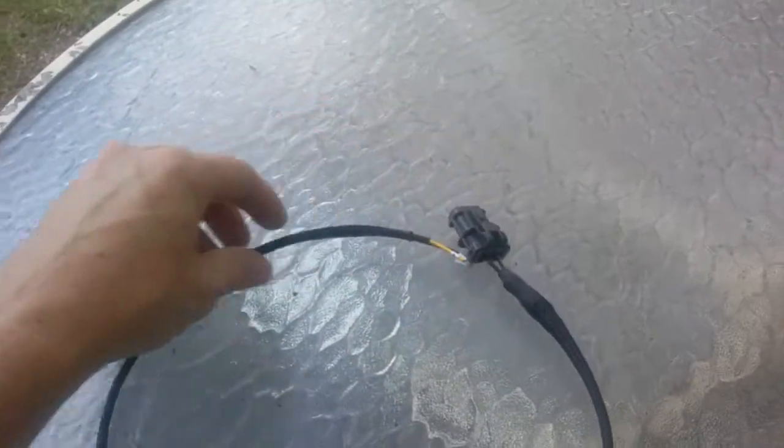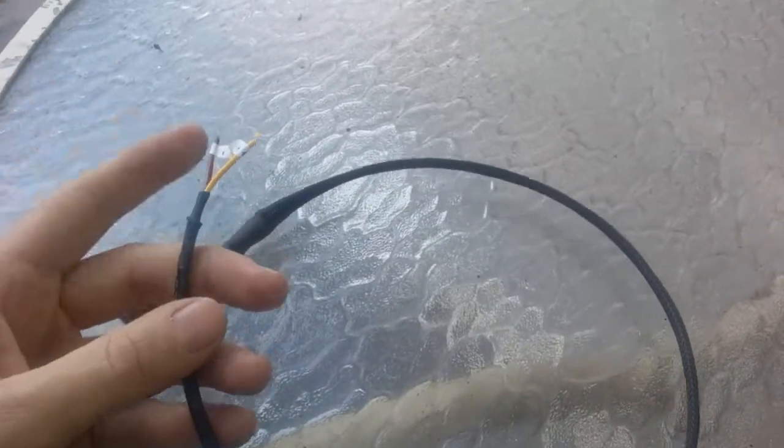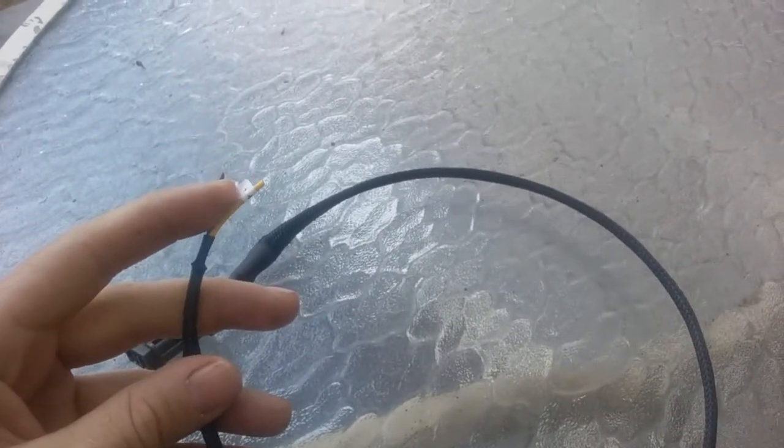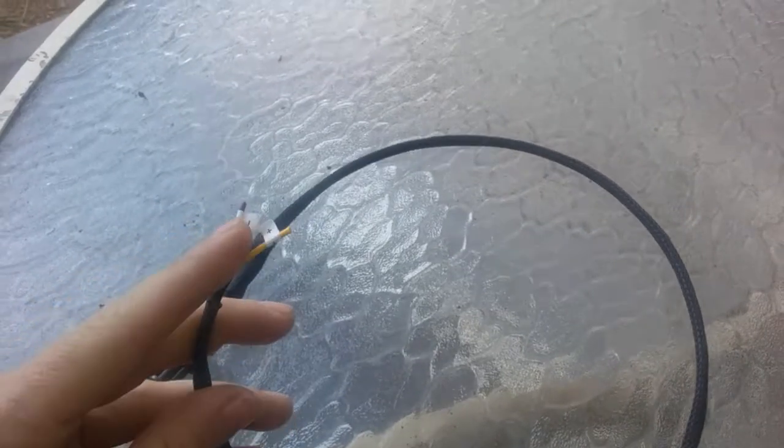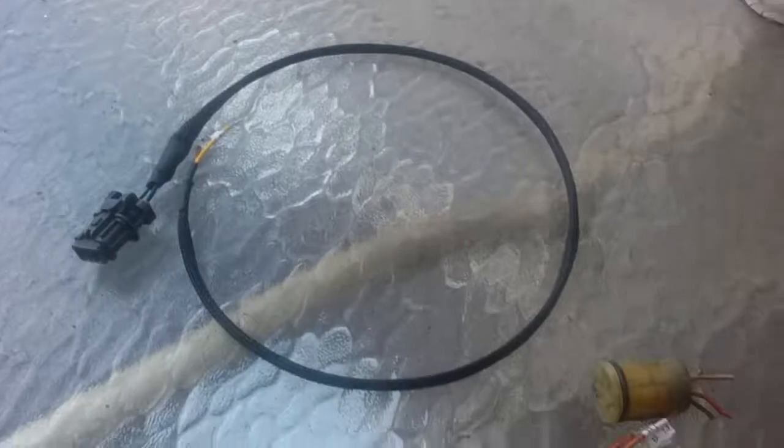And the other part goes to where the fuse box area is at. And it'll go into a black with yellow stripe wire as your positive, and the other side will be blue for the tack signal. That's about it.